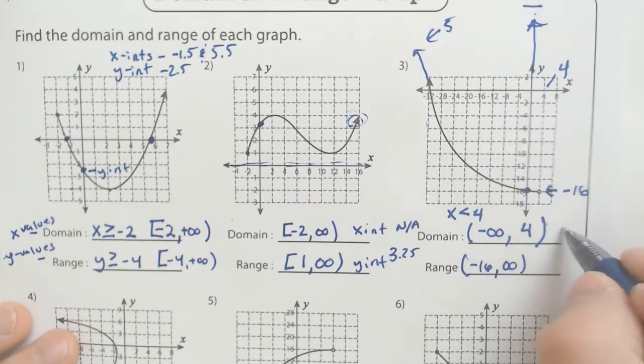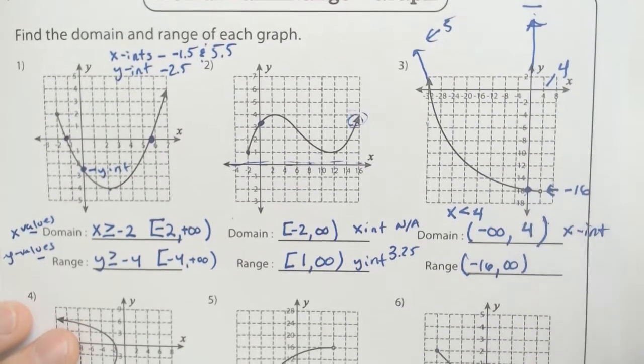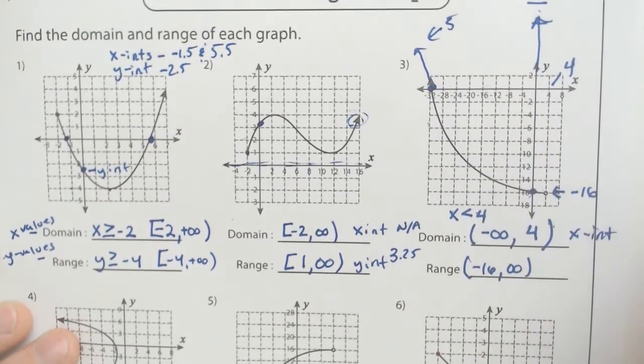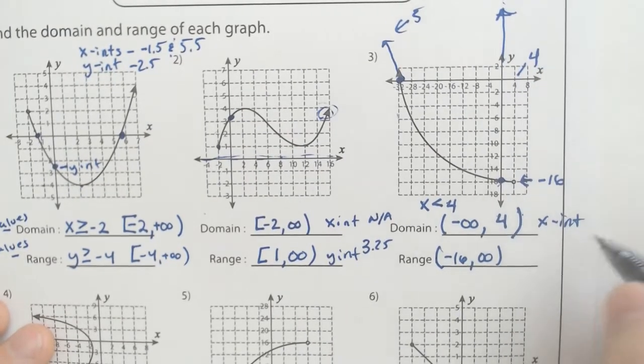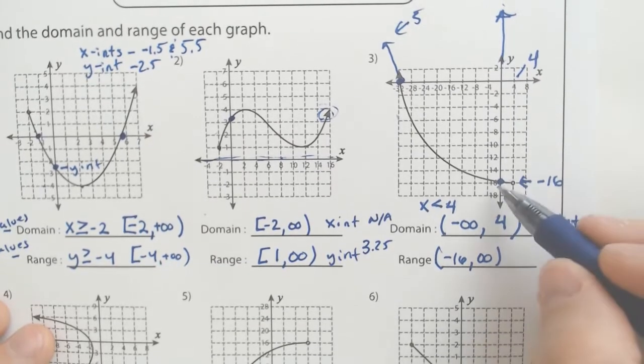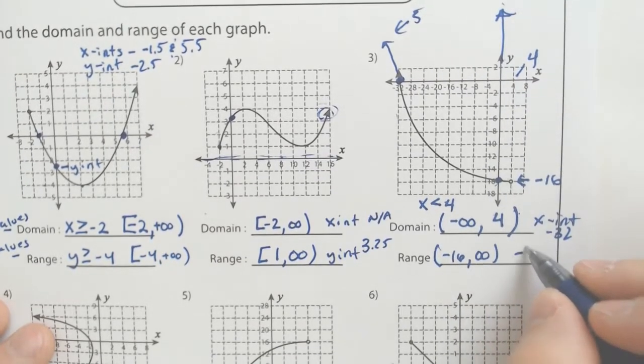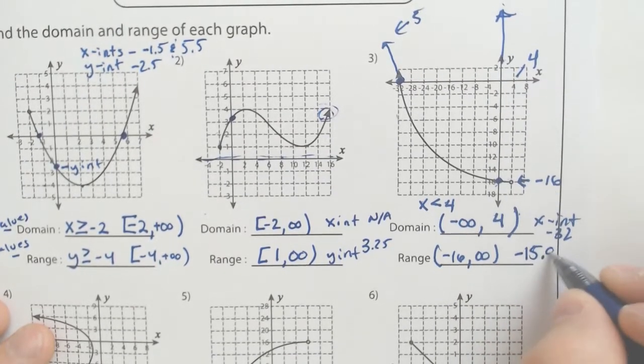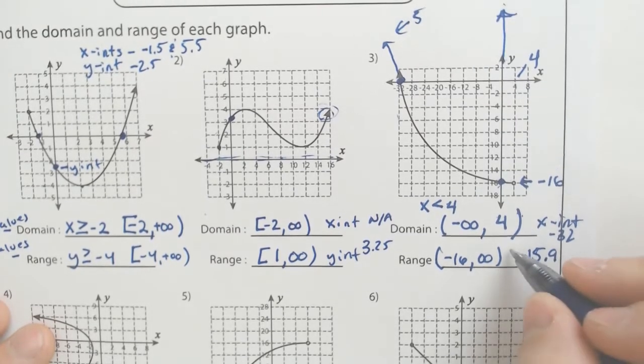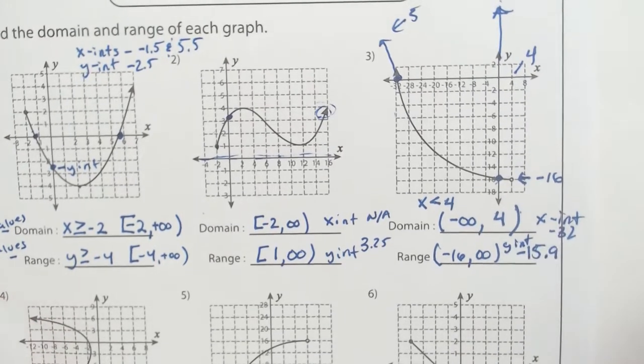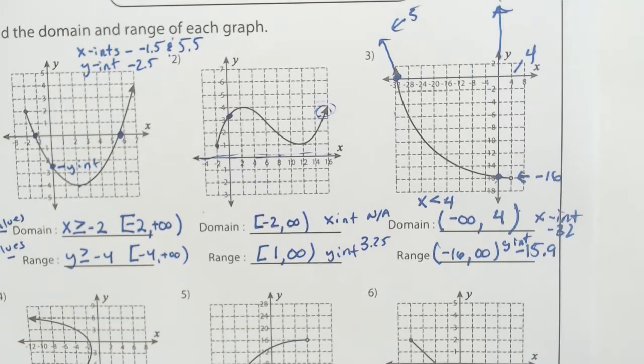So what are the x intercepts or x intercept in this case? It looks like it is very clearly around negative 32 for the x intercept. And the y intercept is really really close to negative 16. I'm going to say negative 15.9. It's not accurate. That's not the point of this. We're just trying to get close.